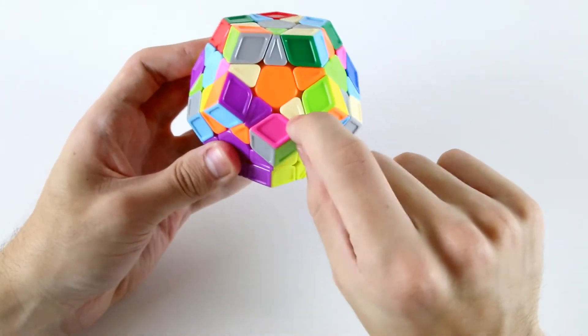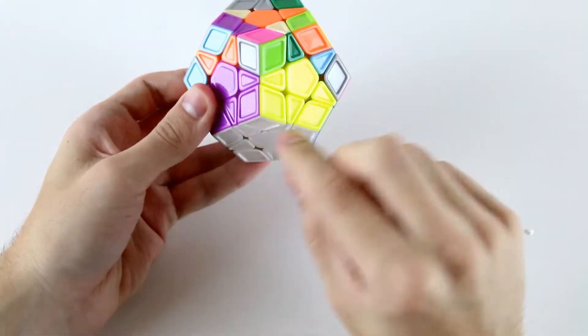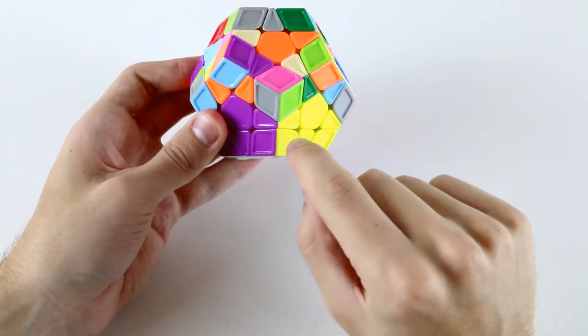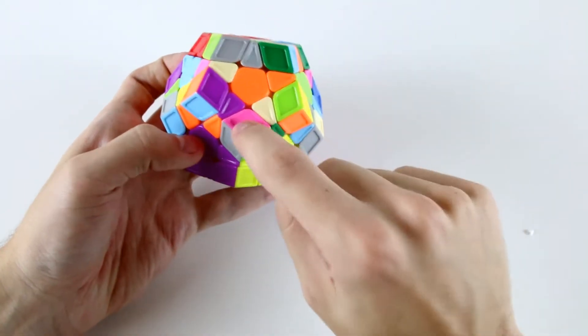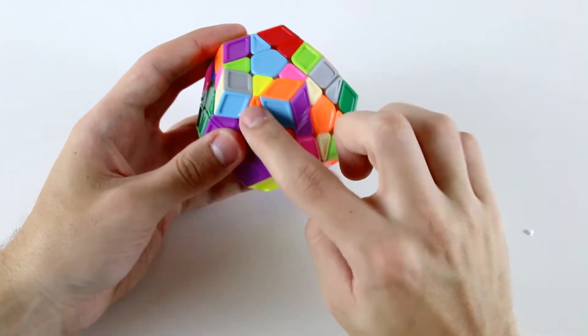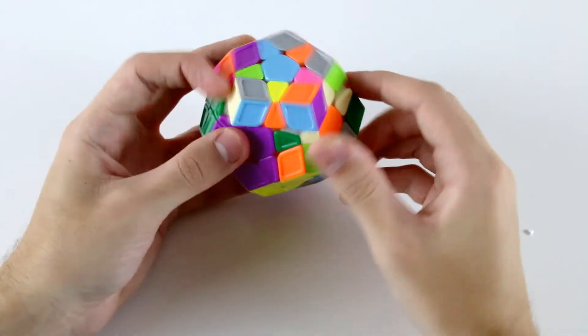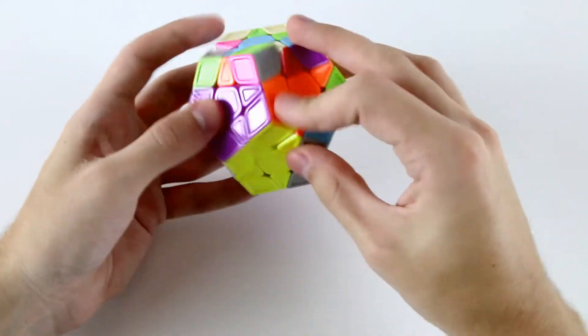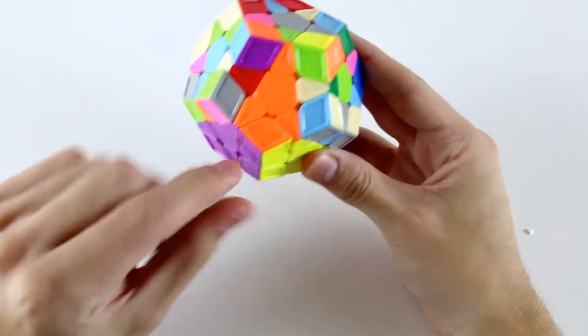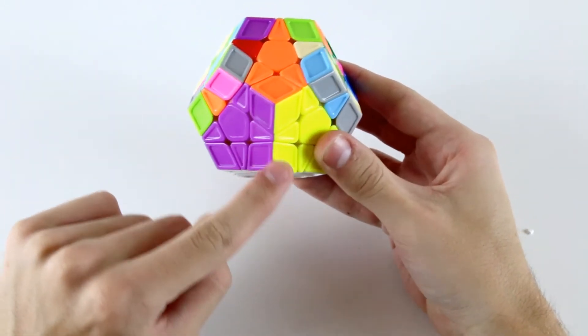We're going to build this edge-corner-edge block directly above an F2L pair that we've solved. Here we've got the white, purple, and yellow block, and we need to solve these three pieces just above them. I'm going to start out by solving this yellow and orange here and then insert this pair. Now I've created this edge-corner-edge block above an F2L pair.